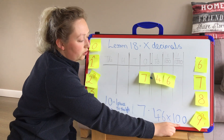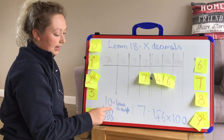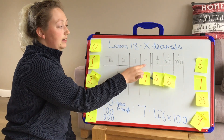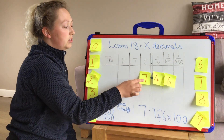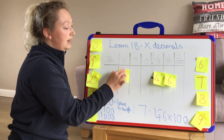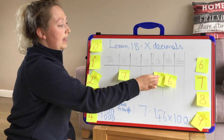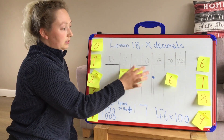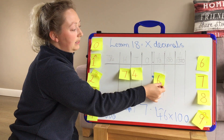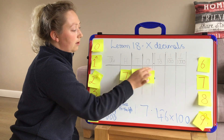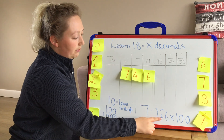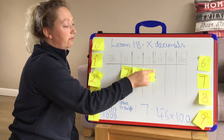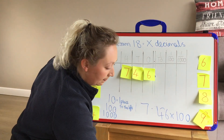If we're timesing by 100, can you see it's got two zeros? So this time, instead of moving it one place like with 10, we're going to move it two places to the left — our values are getting 100 times bigger. This 7, that is in the ones column, — 7 times 100 we know is 700 — so this needs to go in our hundreds column. This 4 tenths moves two places to give us 40. And our 6 hundredths moves two places to the left. So 7.46 times by 100 equals 746. Notice now how all our values are before the decimal point, so we don't need to put anything in those boxes.